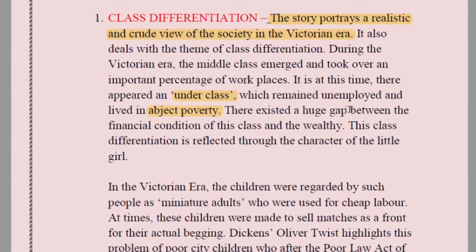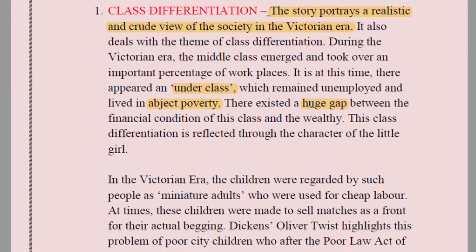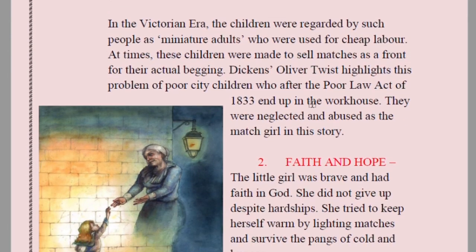It is at this time that an underclass appeared which remained unemployed and lived in abject poverty — extremely poor and suffering. There existed a huge gap between the financial condition of this underclass and the wealthy. This class differentiation is reflected through the character of the little girl, who identifies this difference where nobody cares about her.